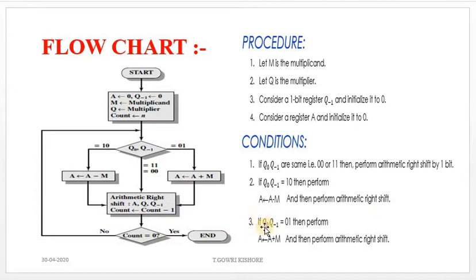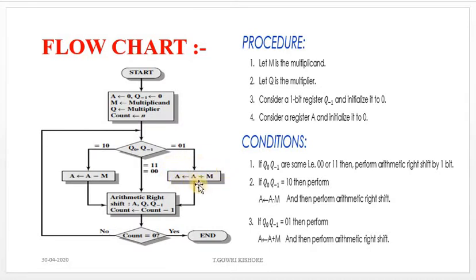Third condition: if Q naught and Q minus 1 equal 0 1, then we perform A → A plus M, followed by an automatic right shift. After performing the right shift, we check if the count equals 0. If yes, we end. If not, we repeat the same conditions again.